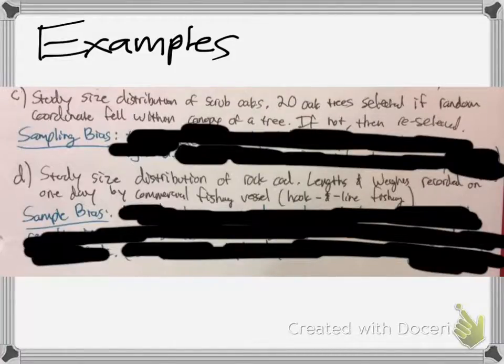Okay, so pretty much if the oak tree falls above the canopy line, it's selected as a data point. And if not, it is reselected as a data point. So do you see the bias?